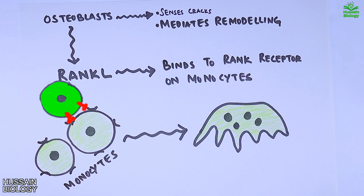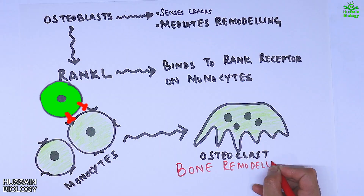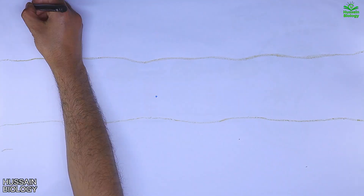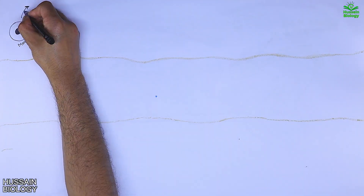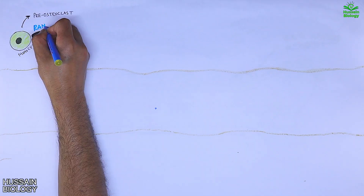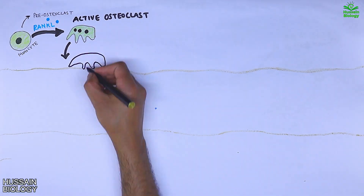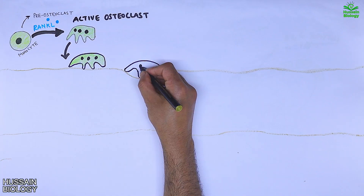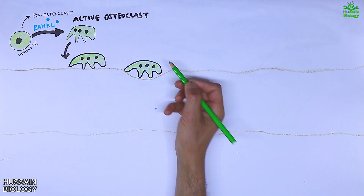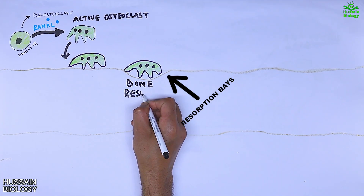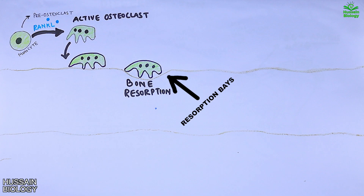In the bone resorption phase, we've seen how monocytes get transformed into osteoclasts. The active osteoclast forms a resorption base on the bone surface as shown in the diagram, and from here the active osteoclast starts secreting different enzymes and molecules which drive the resorption process.